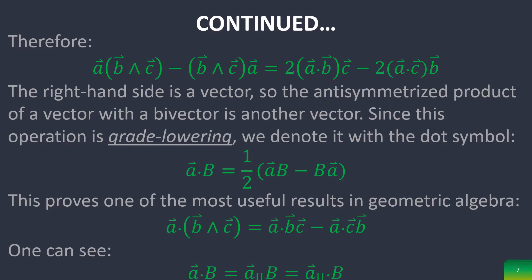which in the next slide simplify to this. So the right-hand side is a vector. So the anti-symmetrized product of a vector with a bivector is another vector. Since this operation is grade-lowering, we denote it with the dot symbol, which proves one of the most useful formulas in geometric algebra.